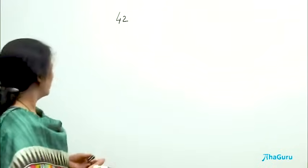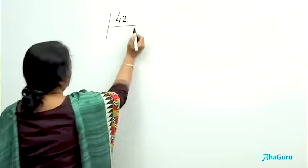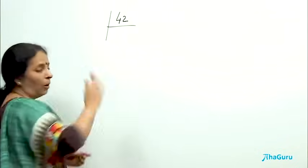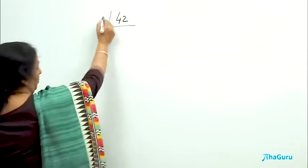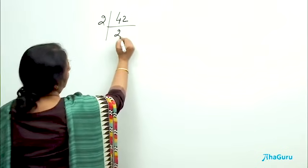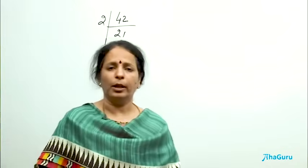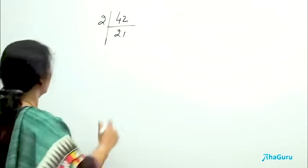What are the factors of 42? We generally do this by the tree method or continuous division method. So you start dividing by all the prime numbers you know. We start from 2. So what is this? 21. 2 is a prime even though it is even in nature, it is the only even prime.